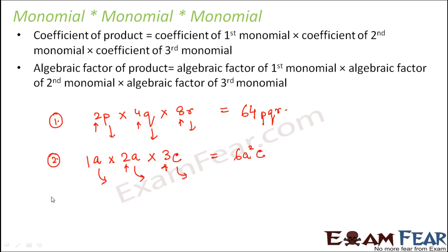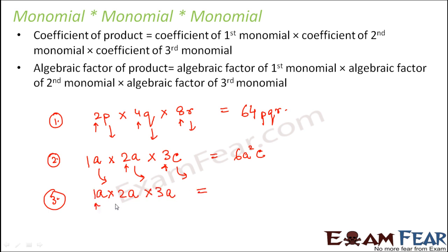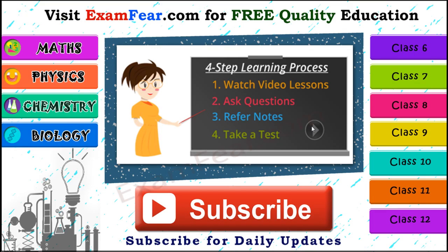Let's try one more: a into 2a into 3a. Again first the constants: 1 into 2 into 3 gives 6. Then a into a into a gives a³. So the answer is 6a³. In this fashion we can find the product of three monomials.